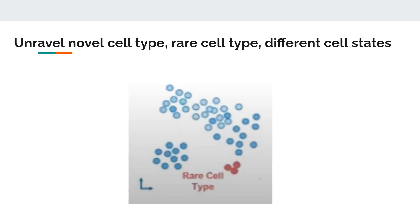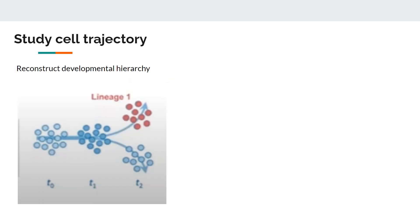While doing subpopulation analysis, you can also easily identify rare cell types — this is very important. Novel or rare cell types can be studied through this application. Another application is studying the trajectory, differentiation, or lineage of cells. You know that when a cell differentiates — take a stem cell for example — it passes through different stages.